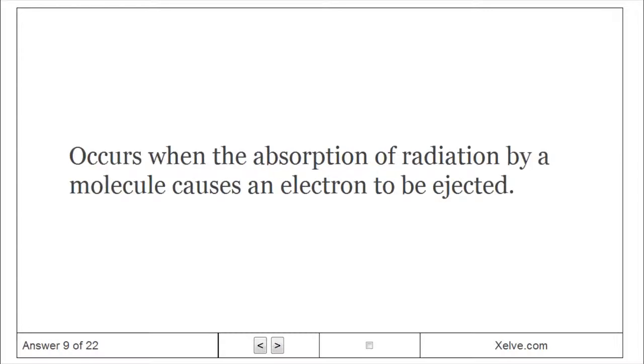Photoionization occurs when the absorption of radiation by a molecule causes an electron to be ejected.